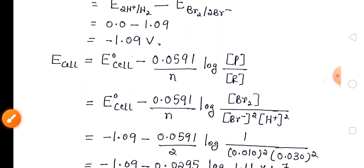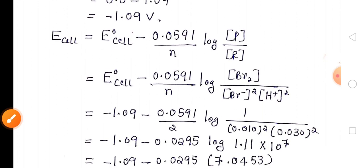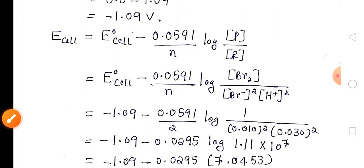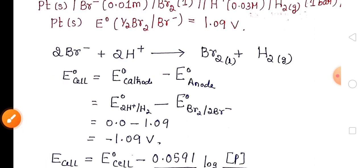Now we will go to the Nernst equation. E_cell = E°cell − (0.0591 / n) × log([products] / [reactants]). E°cell we have calculated as −1.09. The n value is 2, as there are two electrons involved in the oxidation or reduction reaction.